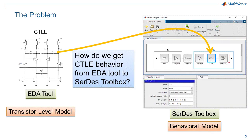What is the problem we are trying to solve? We are trying to make a behavioral model in CERTES Toolbox that models a behavior captured in the transistor-level design tools. The behavioral model needs to reproduce the behavior of the CTLE accurately enough that the IBIS AMI model will predict the silicon behavior in a channel simulator. The CERTES Toolbox CTLE is configured through a GPZ matrix, so a method is required for extracting the poles and zeros from the transfer function information.